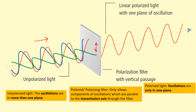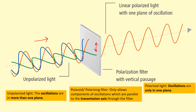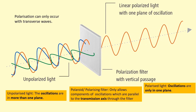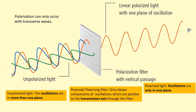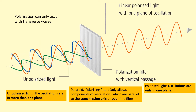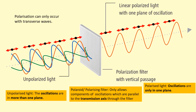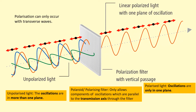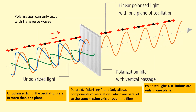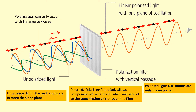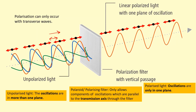What comes out is polarized light — where the oscillations of the electric field are only in one plane. Polarization can only occur with transverse waves. If you tried this with sound, which is a longitudinal wave, it would just go straight through, because the oscillations are parallel to the direction of energy travel and would not be stopped by any polarizing filter.